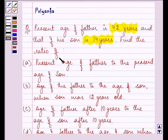Find the ratio of, firstly, present age of father to the present age of son. Secondly, age of father to the age of son when son was 12 years old.